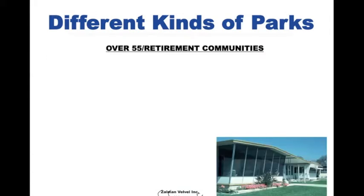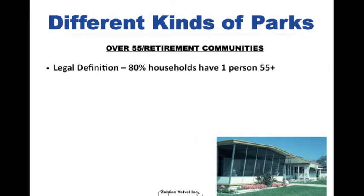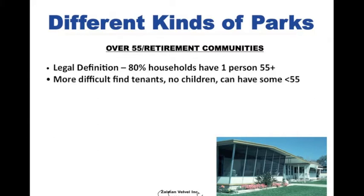The second kind of park is an over-55 retirement community, and you must know the legal definition of it. This is a park where 80 percent of the households have at least one person over the age of 55. This is the only place in the United States where you can discriminate because of age. It is more difficult to find tenants for a park like that because you can't have children except for short stays, and you can have some people less than 55 — about 20 percent. I would say you get about five to ten times more calls in a family park than you do for an over-55 park.